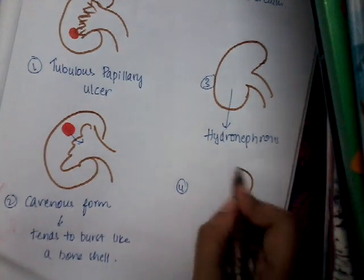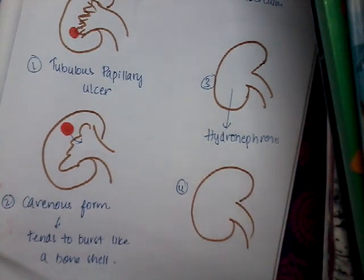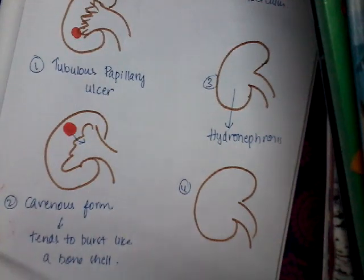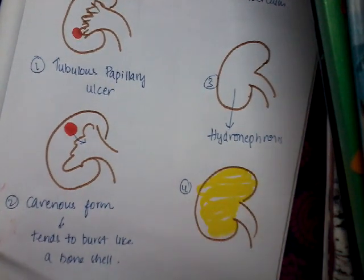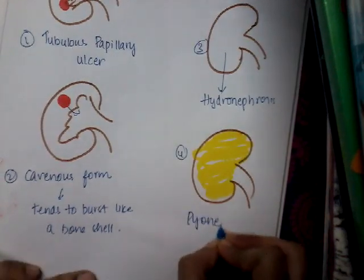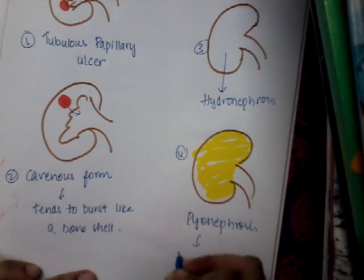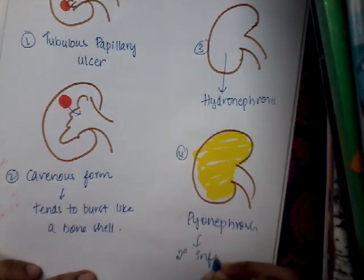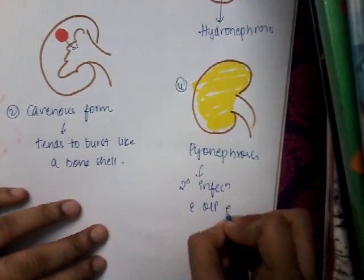The fourth type is pyonephrosis — there is pus in the kidney. This pyonephrosis occurs whenever there is secondary infection with E. coli and other organisms.